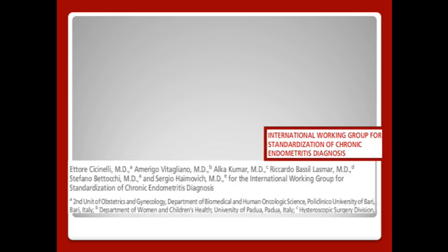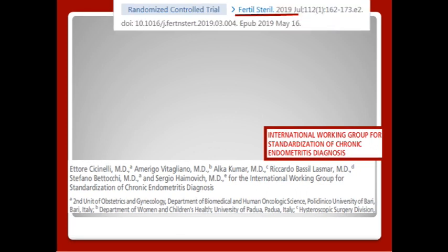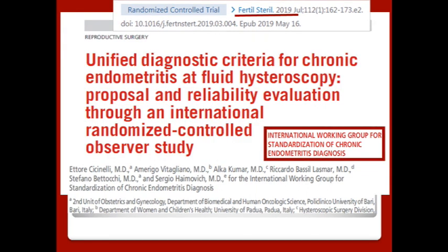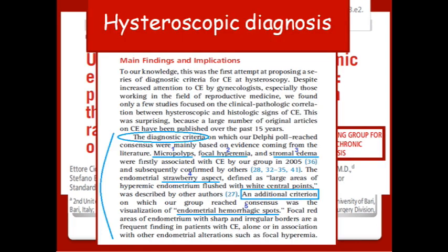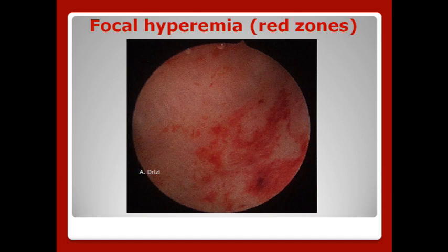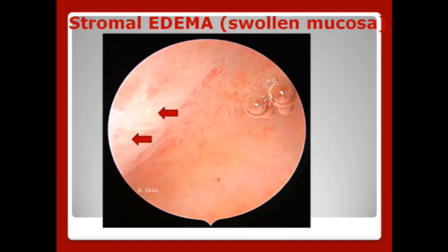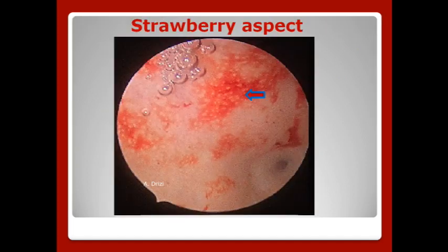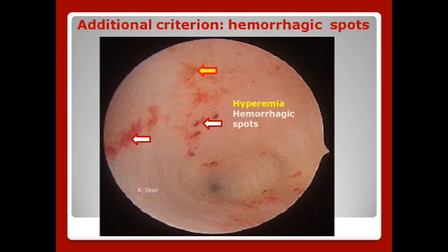For the record, the International Working Group for Standardization of Chronic Endometritis Diagnosis, published in Fertility and Sterility by mid-2019, unified diagnostic criteria for chronic endometritis at hysteroscopy: micropolyps, focal hyperemia, stromal edema, strawberry aspects, and hemorrhagic spots.